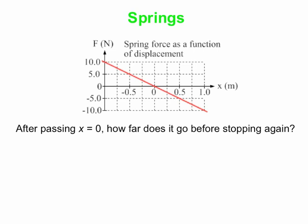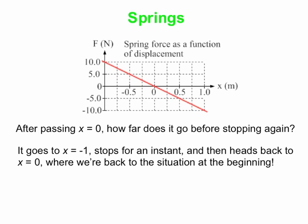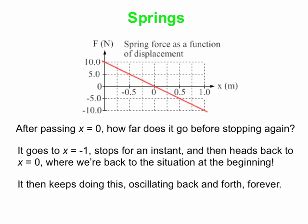The block goes from zero out to one, back to zero, then continues to x equals minus one, stops, and heads back to x equals zero with five joules of kinetic energy and velocity in the positive direction. We're back to where we started, so the cycle just repeats — oscillating back and forth forever, as long as there's no friction or air resistance. In any real system it eventually stops, but the closer to ideal, the longer it oscillates.